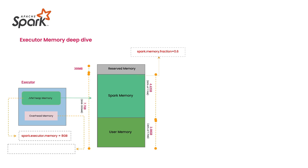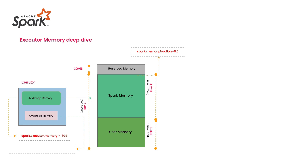So JVM on-heap memory is divided into Reserved Memory, Spark Memory, and User Memory. The ratio between them: Reserved Memory is 300MB fixed, and the rest is split between Spark Memory and User Memory in a 60-to-40 ratio by default. You don't need to set this explicitly — it's the default. However, if you want more user memory or more Spark memory, you can configure it using Spark commands.